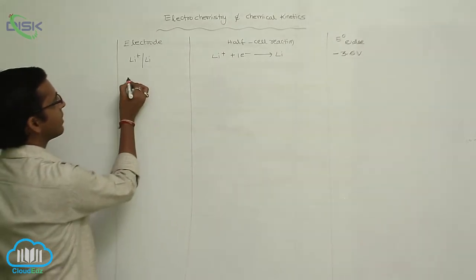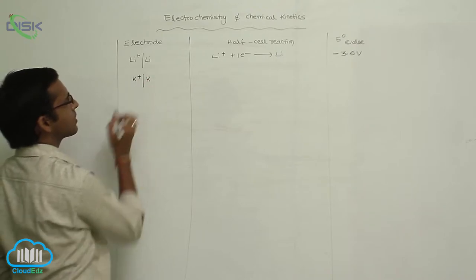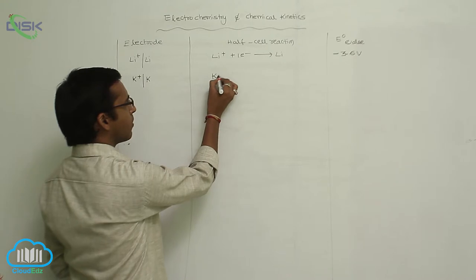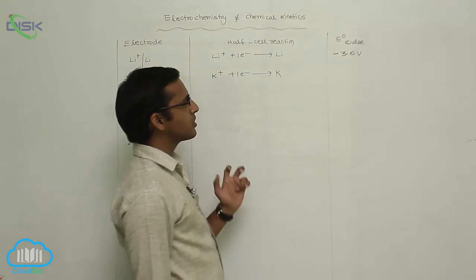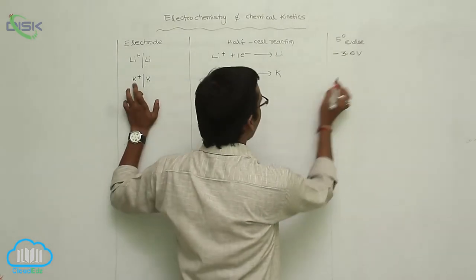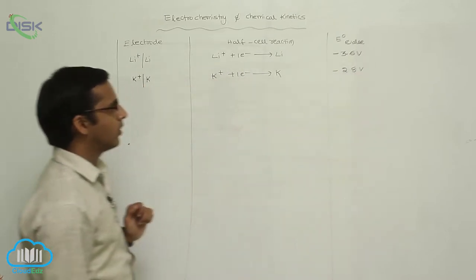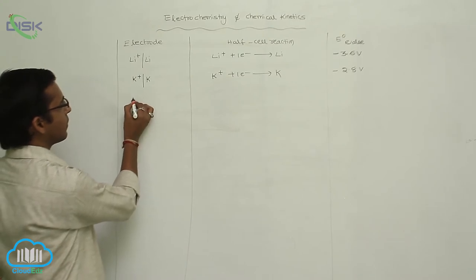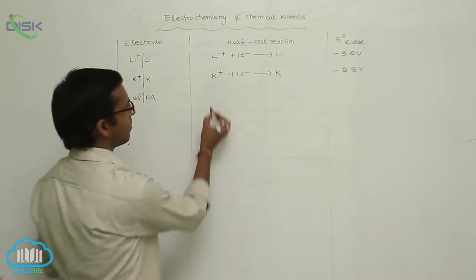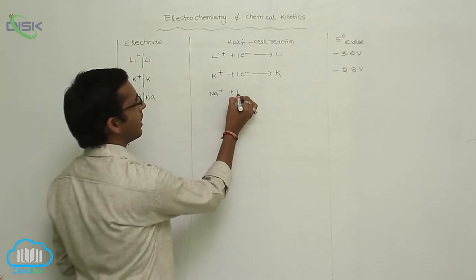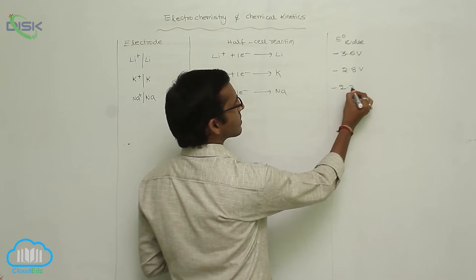Next, after lithium is potassium: K⁺ | K. Potassium also gains one electron and is converted to K metal. Its E° value is −2.8 V. After potassium is sodium: Na⁺ | Na. Sodium also gains one electron to be converted to Na. Its E° value is −2.7 V.